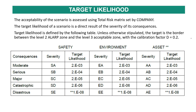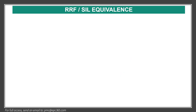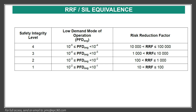The calculated likelihood equals the initiating event likelihood multiplied by the time at risk, the exposure parameter, and the probability of failure on demand. When you have the calculated risk, you compare it with the target likelihood. For example, for a safety disaster scenario, your target should be 1×10⁻⁸. SIL 1 corresponds to a risk reduction factor between 10 and 100, where the PFD is between 10⁻¹ and 10⁻².